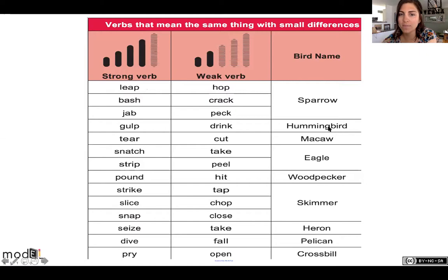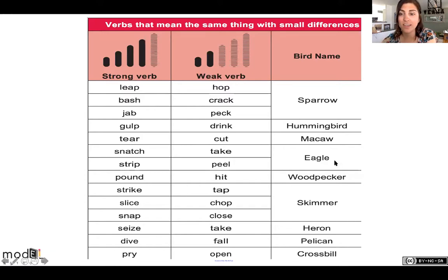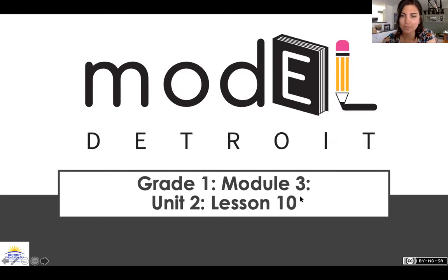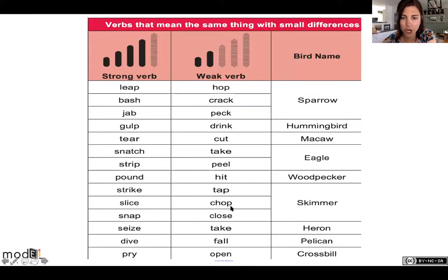Let's take a look at the hummingbird — they can either drink or gulp. The macaw can cut or tear. The eagle can either take or peel; you can also use stronger verbs like snatch and strip. The woodpecker — the weak verb is hit, and the strong verb is pound. The skimmer can tap, chop, or close, and stronger verbs we can use are strike, slice, snap.